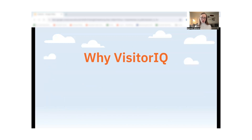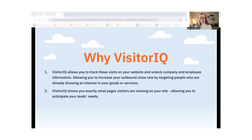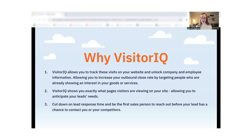So why do all these statistics matter? What if you could be the first sales team to reach out to a potential buyer visiting your site and intercept your competitors? What if you could see exactly which pages the buyers are visiting to see what they're interested in and tailor your approach to their specific needs? VisitorIQ allows you to track visits to your website and unlock company and employee information, so you can increase your outbound close rate by targeting the people who are already showing an interest in your goods and services. VisitorIQ shows you exactly which pages visitors are viewing, allowing you to anticipate your lead's needs, cut down on your response time, and be the first team to reach out before your lead even has a chance to contact you or any of your competitors — so you can turn that cold website visit into a hot lead in your pipeline in just a few clicks.